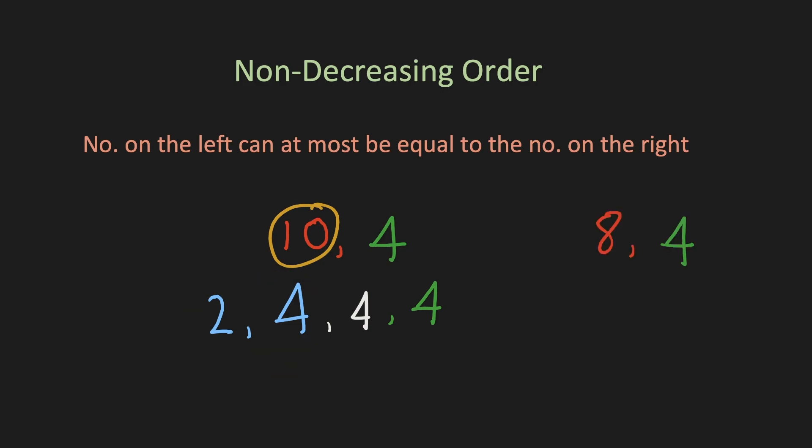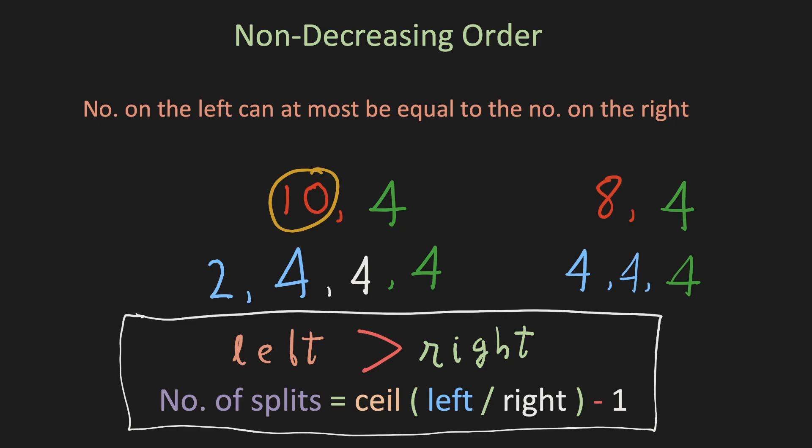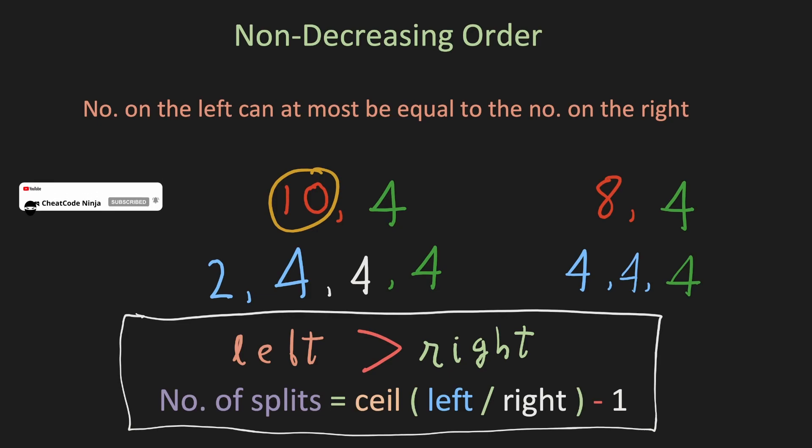Let's take another example. Here the left value 8 should be broken down into two 4s. In this case only one split is required, because after the split there was no remaining portion left. To minimize the split operations we have to maximize the split parts. Hence we can use the ceiling of our left element divided by the right element. This gives us the total number of parts of the split operation. Since the number of splits required is one less than the number of parts, we subtract 1 to get our answer.